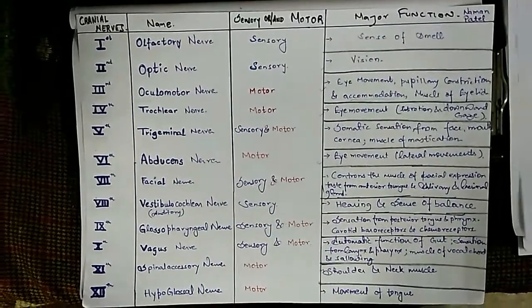Before starting cranial nerves, we need to know about the types of nerves. There are three types: sensory nerves, also known as afferent nerves, which send sensory information to the CNS; motor nerves, also known as efferent nerves, which act on a particular area; and mixed nerves, which contain both sensory and motor aspects.